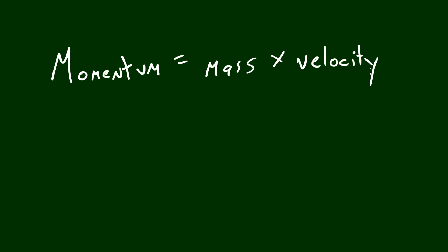So since mass and velocity are directly related to momentum, the faster and more massive an object is the harder it would be to stop.